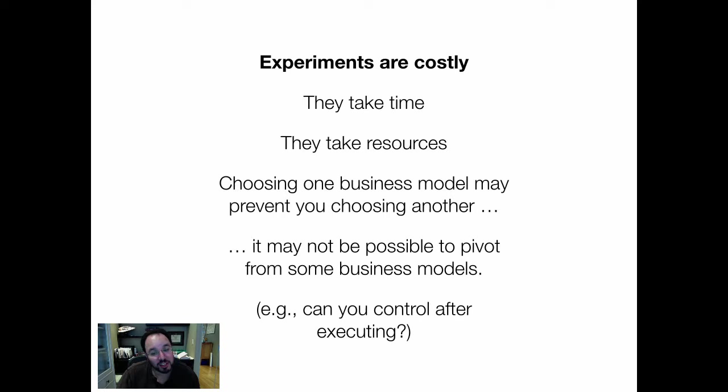Can you control after you've chosen a path of execution? When you actually launch a product, all of a sudden everybody knows about it. Whereas one of the aspects of a control strategy is to keep a product secret, specialized, under the radar, and build up reputation and sort out kinks through that model. So if you execute and focus on getting to market quickly, you may not have the option to control later on.